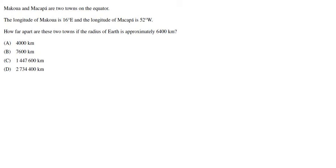Next multiple choice question. Maku and Makapa are two towns on the equator. The longitude of Maku is 16 degrees east and Makapa is 52 degrees west. That means I'm going to be adding if I'm trying to find angular distance. How far apart are these two towns? We're looking for the arc length or the distance. I still need to find my angular distance, which in this case is 16 plus 52, because one's east, one's west, which is 68 degrees.